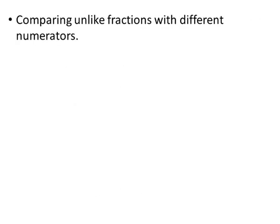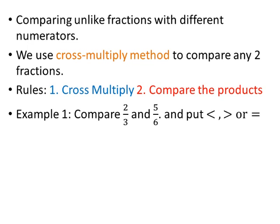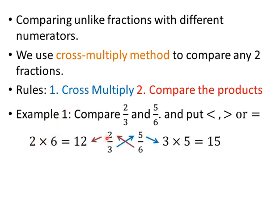Comparing unlike fractions with different numerators: we use the cross multiply method, also called the shortcut method. Example: Compare 2 by 3 and 5 by 6. Cross multiply to find the cross products. The first cross product is 2 times 6 equals 12. The second cross product is 3 times 5 equals 15. Since the first cross product 12 is less than the second cross product 15, the fraction 2 by 3 is less than the fraction 5 by 6.